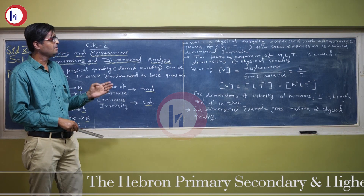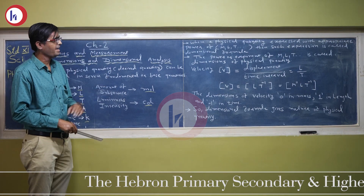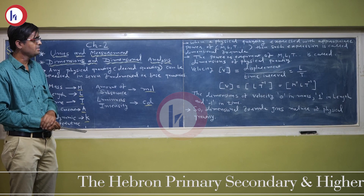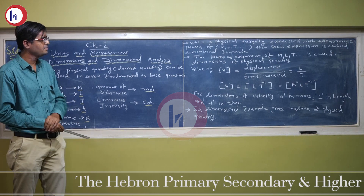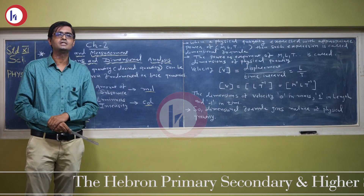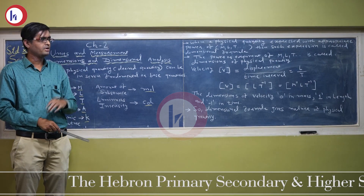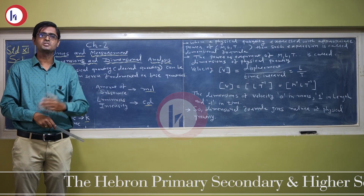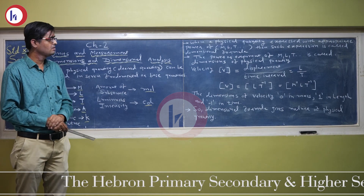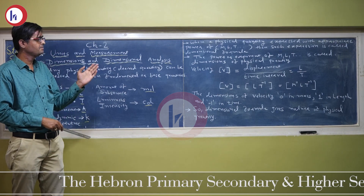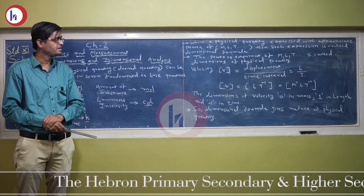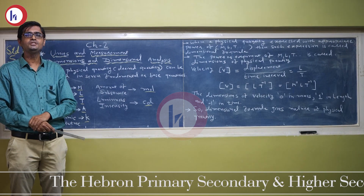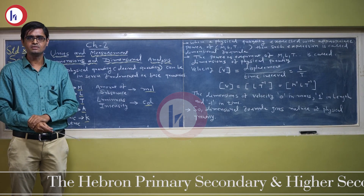The power or exponent of mass, length, and time is called the dimensions of the physical quantity. Whatever the power or exponent of that physical quantity in mass, length, and time — that is known as the dimensions of the physical quantity.